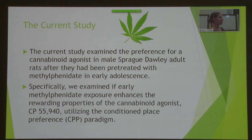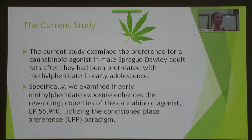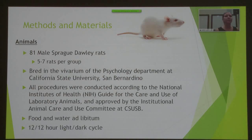For our current study, we wanted to use a cannabinoid agonist, and we decided to use male Sprague-Dawley adult rats after they had been pre-treated with methylphenidate in adolescence. Specifically, we wanted to find out if that pre-treatment with methylphenidate was going to increase the rewarding properties of our cannabinoid agonist. We used the conditioned place preference paradigm — I'll call it CPP from now on.